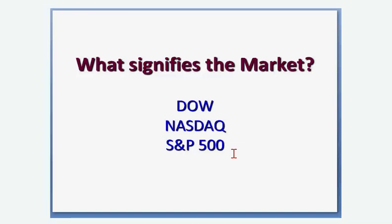We always get a lot of questions about why we use the Dow — there's only 30 stocks in it. Why not use bigger indexes? The answer is it only takes a matter of, once you visually analyze what the market is doing, it only takes five to seven seconds on each chart. So in less than half a minute, you can analyze what the indexes are doing, and the analysis becomes very simple when you apply all three of them.